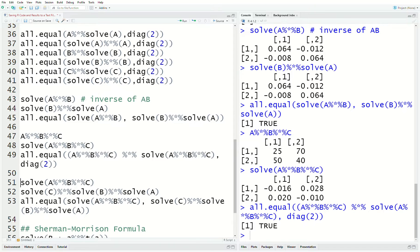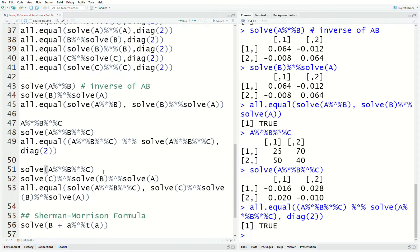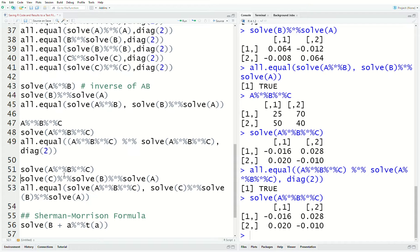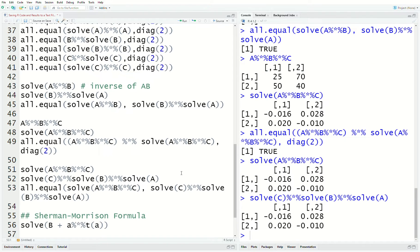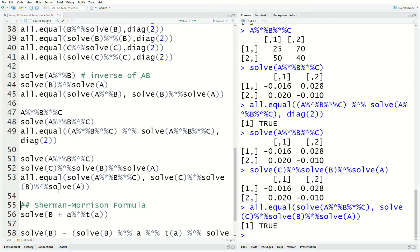Now, one of the inverse properties, matrix inverse properties is that if we take the inverse of ABC, that's the same as the inverse of C times the inverse of B times the inverse of A. The matrices are reversed and they should equal. So, let's run that. And just by visual inspection, they look identical. We could use the all equal function and they are true.